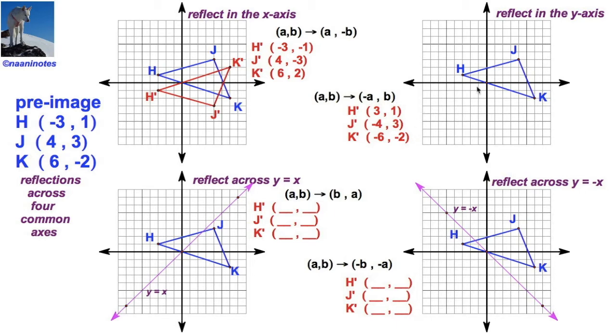Can we plot these? Well, we sure can. We're going to say 1, 2, 3, 1 for h-prime. j-prime, negative 4, positive 3. And k-prime, negative 6, negative 2.